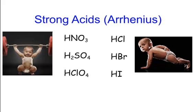You have to know your six strong acids — this is in terms of Arrhenius. Of course HCl, HBr, HI — they're all strong acids. You can see HF is not a strong acid. We also have nitric acid, HNO3; sulfuric acid, H2SO4; and perchloric acid, HClO4.